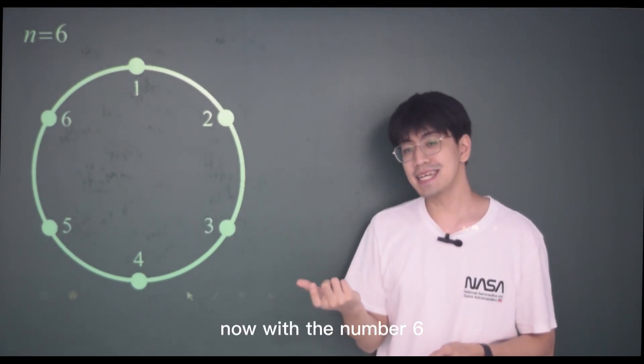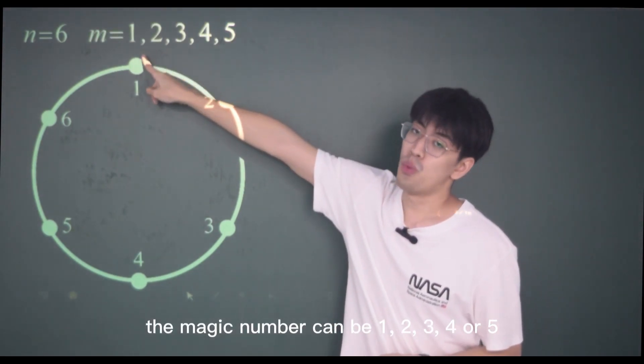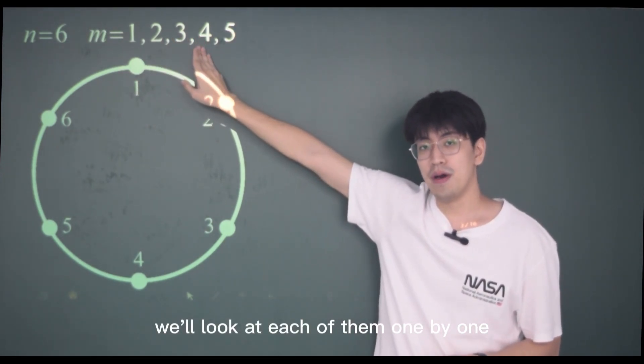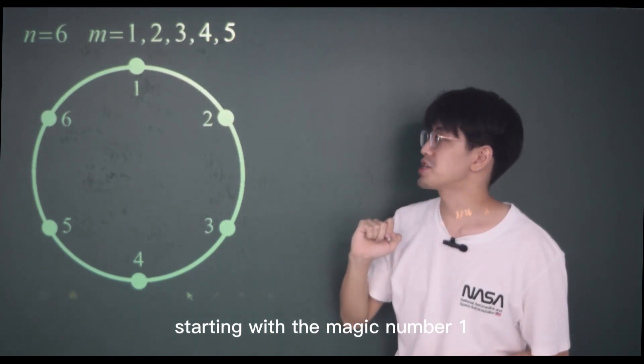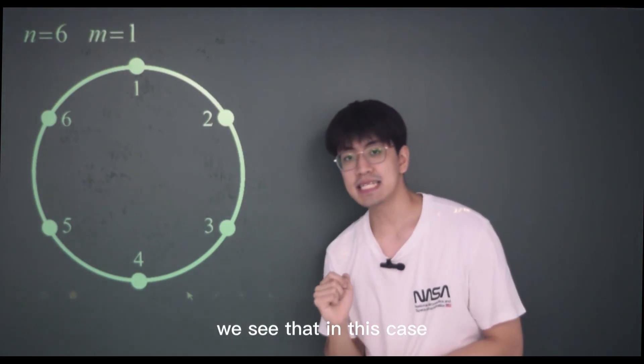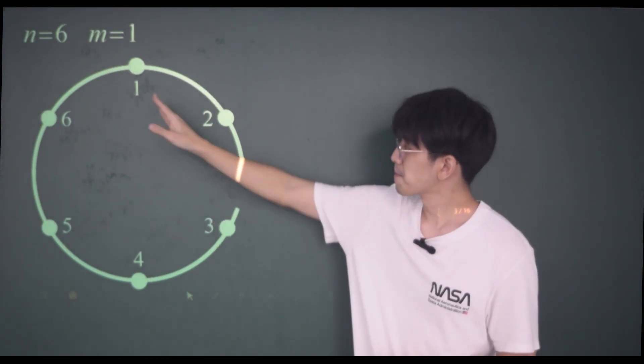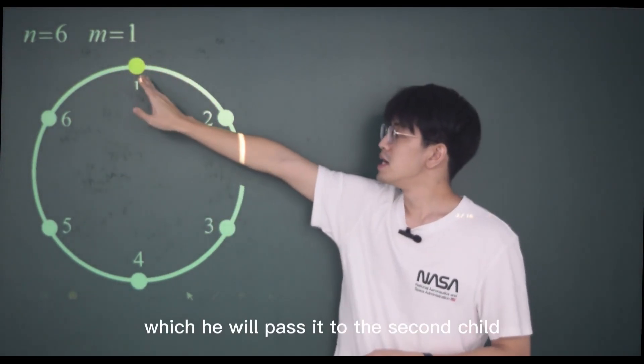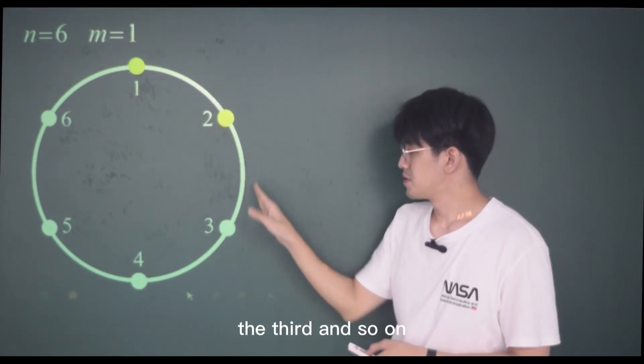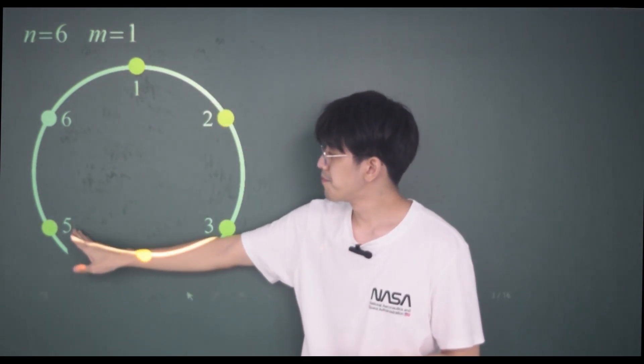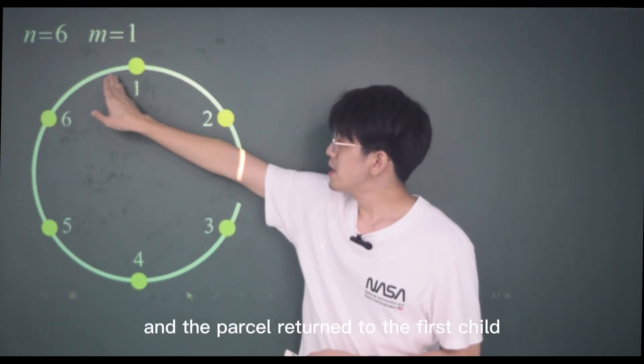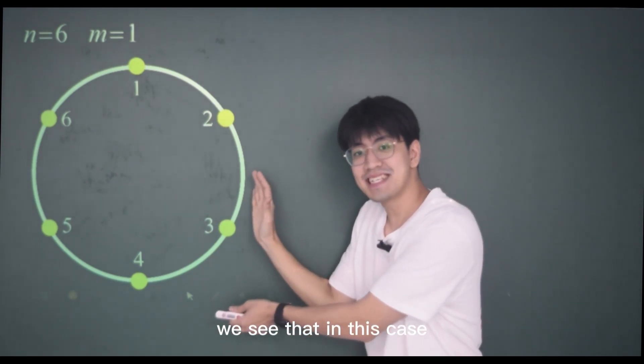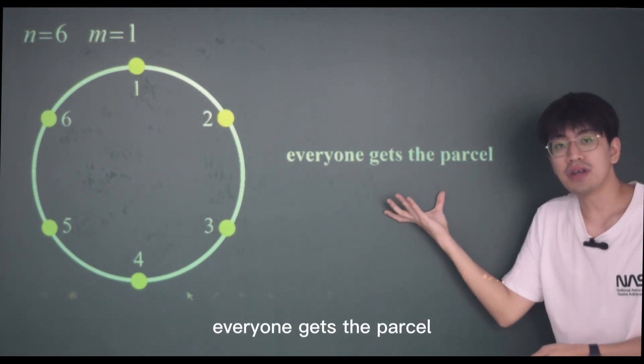With the number six, the magic number can be one, two, three, four, or five. We look at each of them one by one. Starting with the magic number one, you see that in this case, the first child will receive the parcel from the teacher, which will pass it to the second child, the third, and so on. And the parcel returns to the first child and we know the round ends. We see that in this case, everyone gets the parcel.